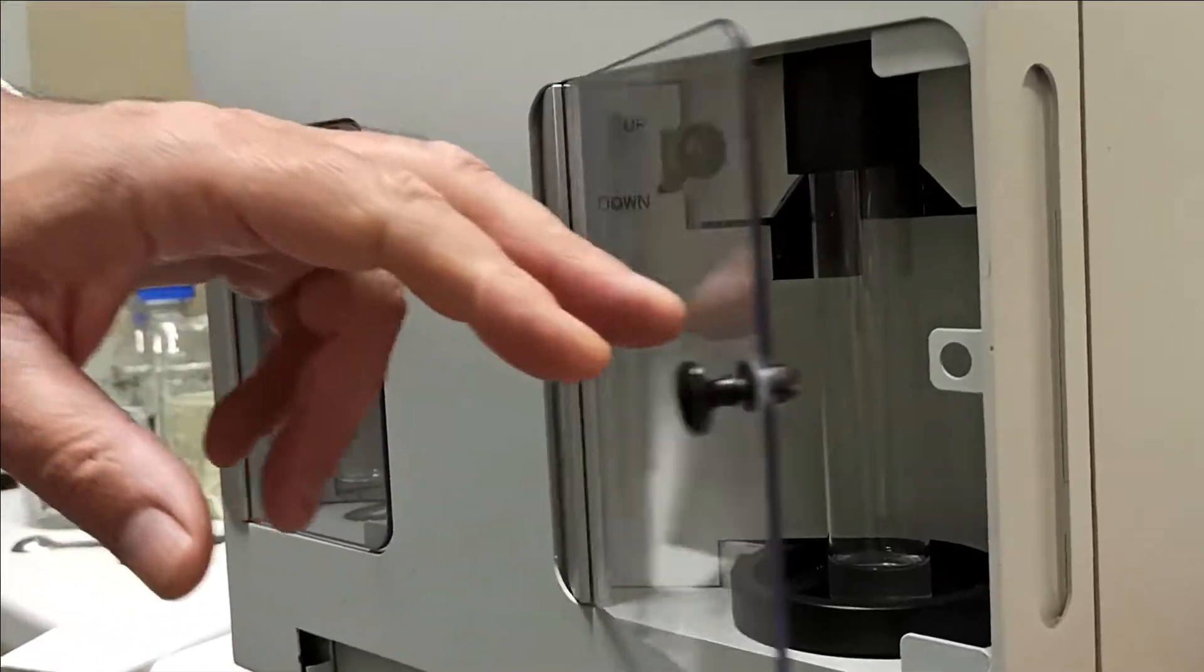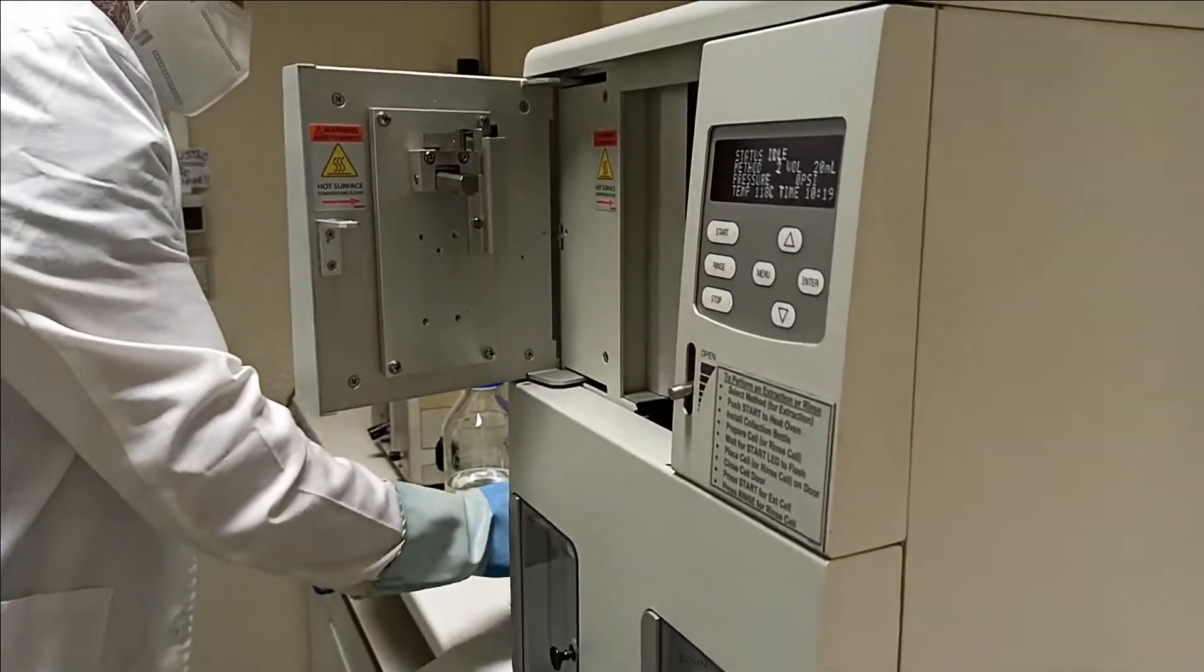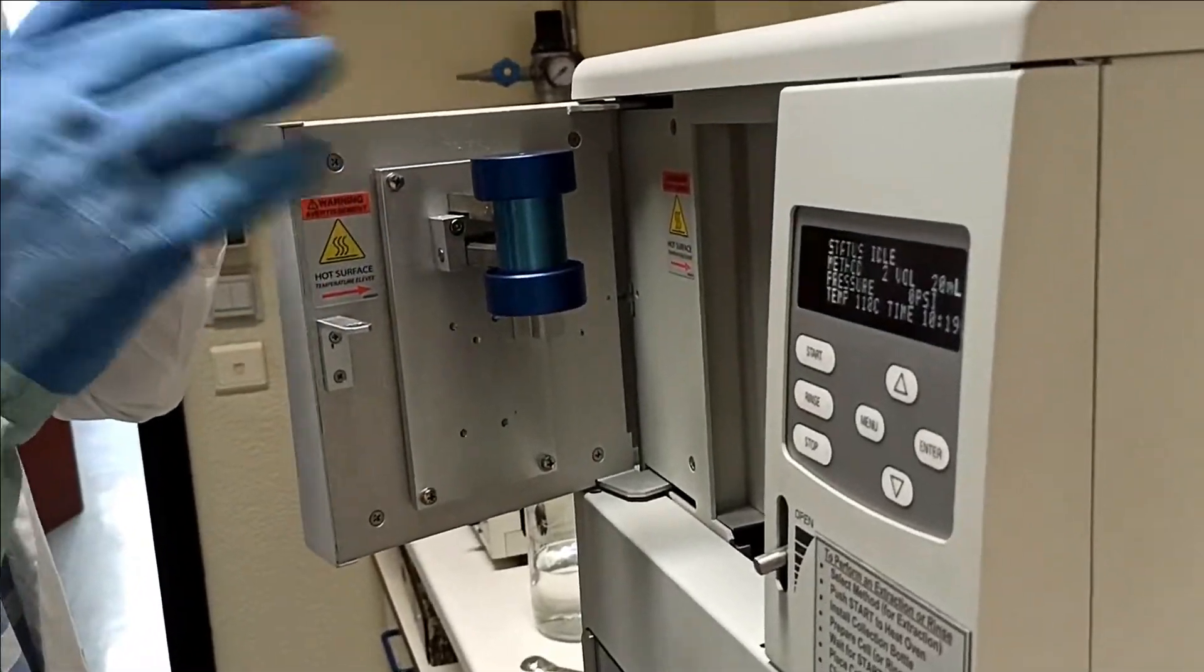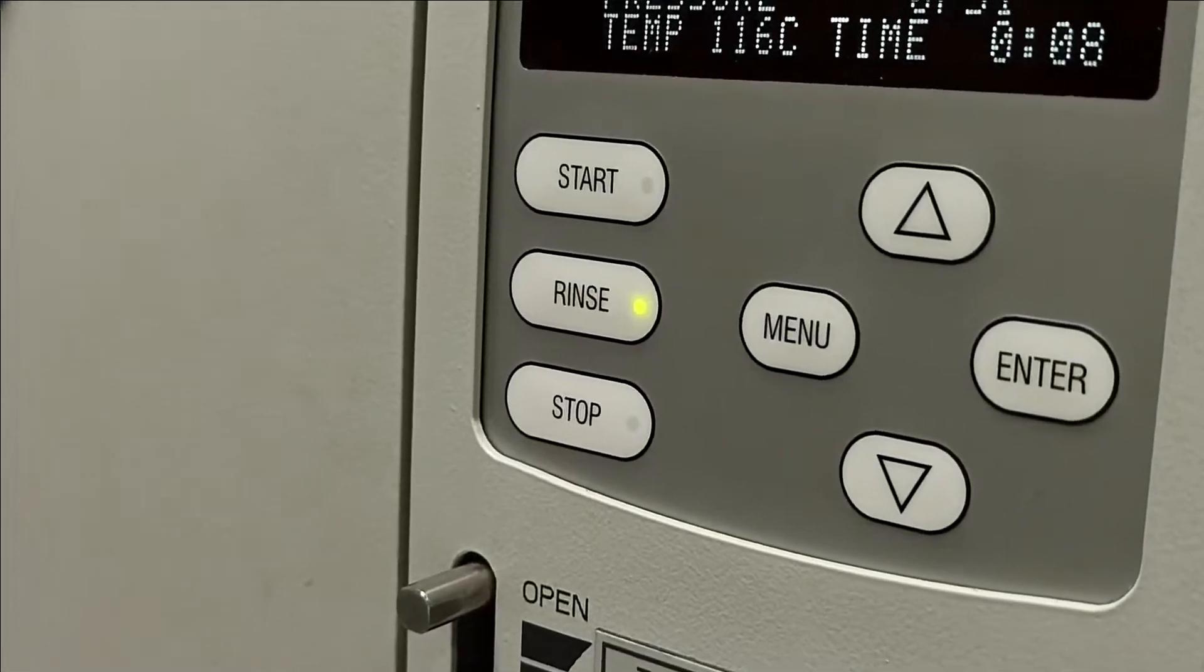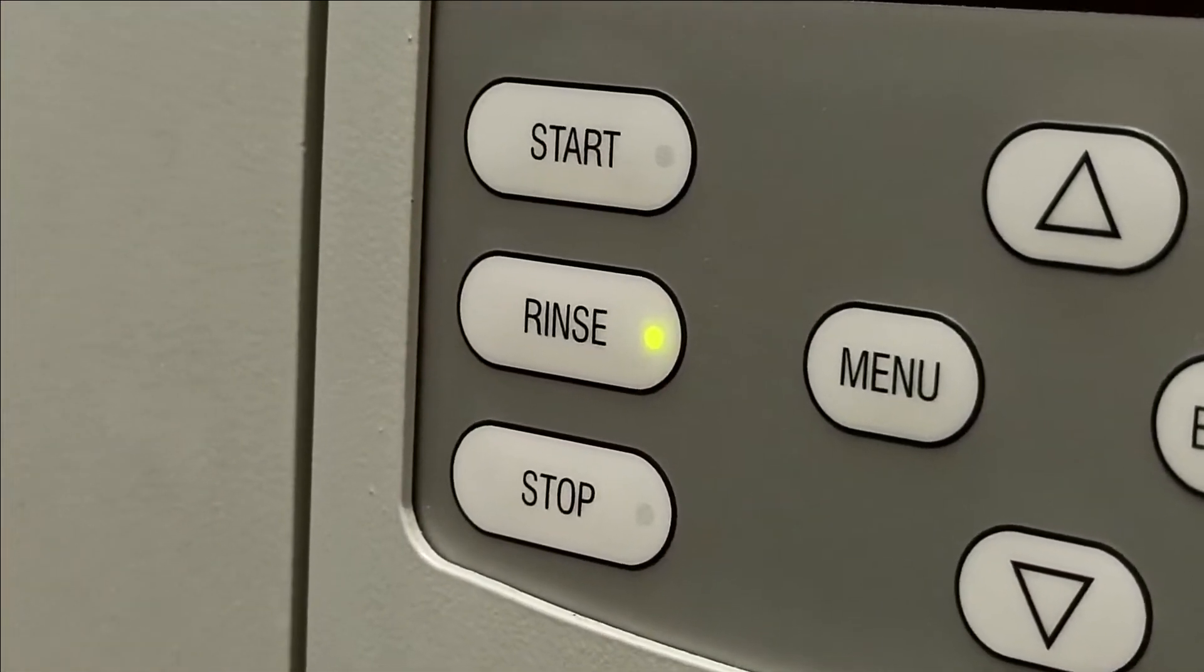Insert the collection tube in the collection chamber and open the oven chamber to insert the rinse cell for the washing procedure. Close it and press rinse. Repeat this washing procedure two more times.